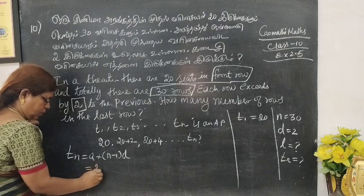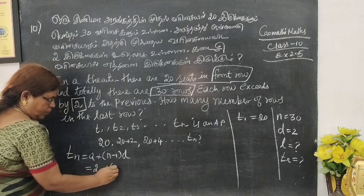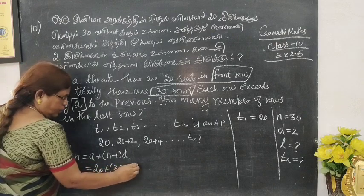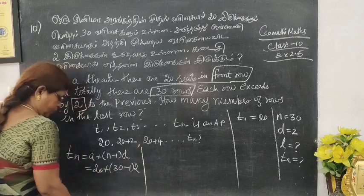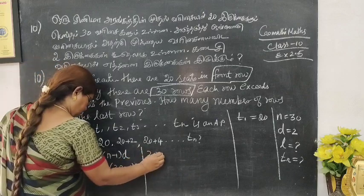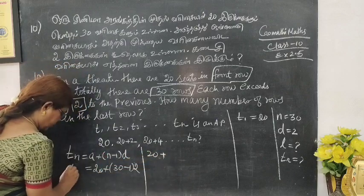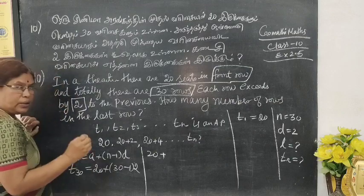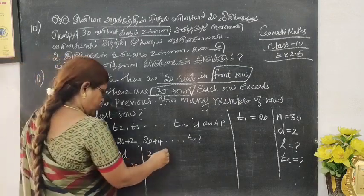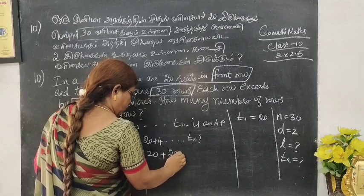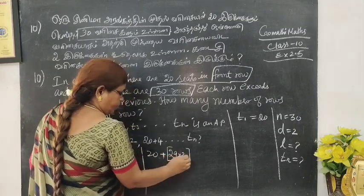So A is 20, N value is 30 minus 1 into D. D is 2. T30, so 29 into 2. You can do this with bracket.